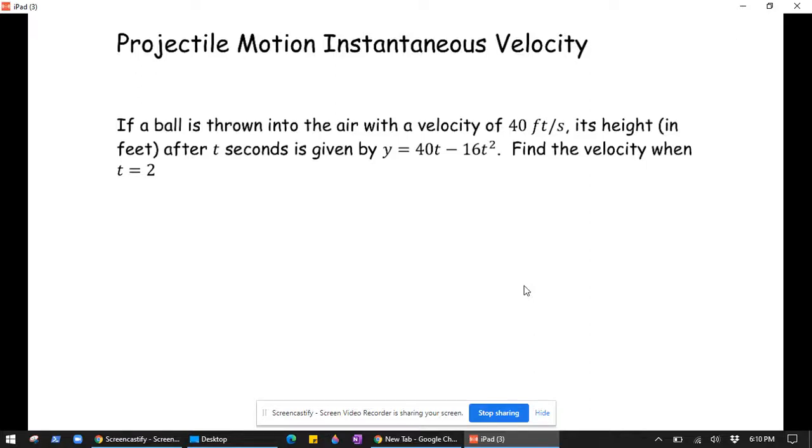In this video we're going to look at projectile motion, in particular instantaneous velocity. If a ball is thrown into the air with a velocity of 40 feet per second, its height in feet after t seconds is given by this equation. Find the velocity when t equals 2.